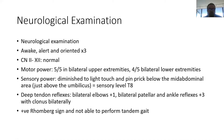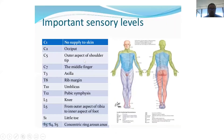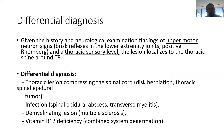He definitely has brisk reflexes, so that's a thoracic spine level injury. These are the dermatomes — you need to memorize them: where C4 is, where C5, C6, C7, C8, T1 are. You need to memorize these dermatomes because each nerve root is responsible for supplying sensation to a certain area of the skin.